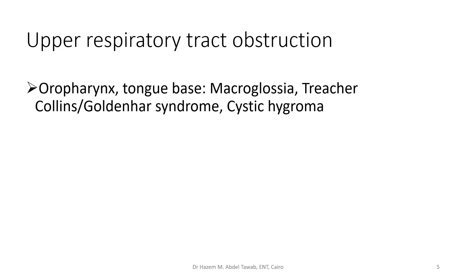For upper airway obstruction, examples in the oropharynx and tongue base include macroglossia, Treacher Collins, and Goldenhar syndrome — syndromes associated with congenital malformations of the jaw and mandible. It is sometimes crucial to create a tracheostomy for these patients to overcome difficult breathing. Cystic hygroma can also cause pressure on the airway and may require a tracheostomy.